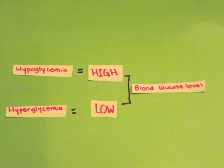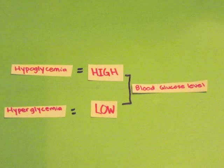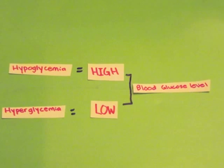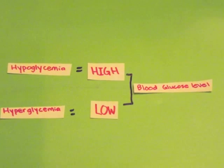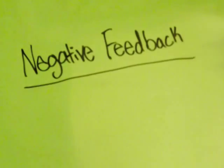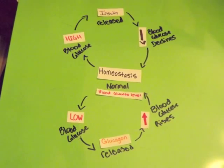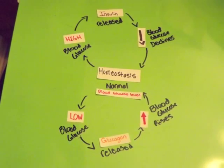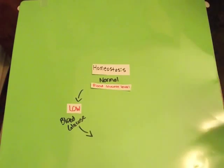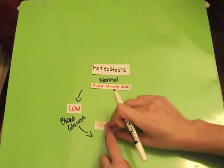Hypoglycemia describes blood glucose above normal, while hyperglycemia describes blood glucose below normal. Normal blood glucose levels are regulated through a process called negative feedback. This system maintains homeostasis in the body by utilizing the hormones insulin and glucagon.